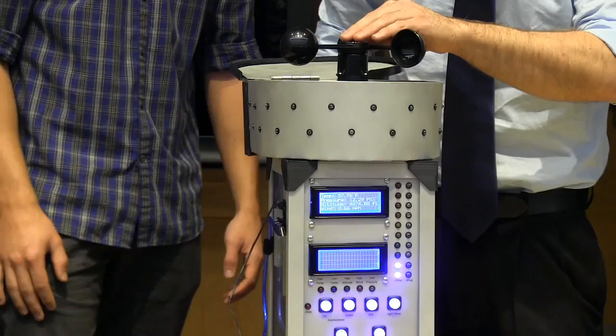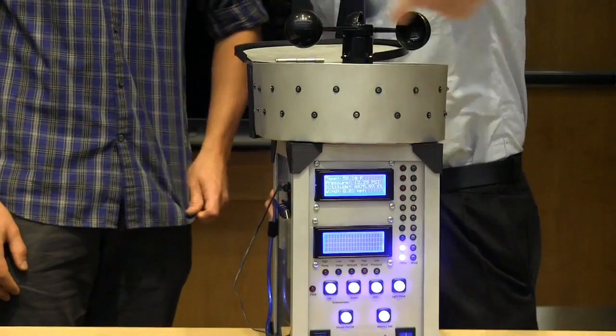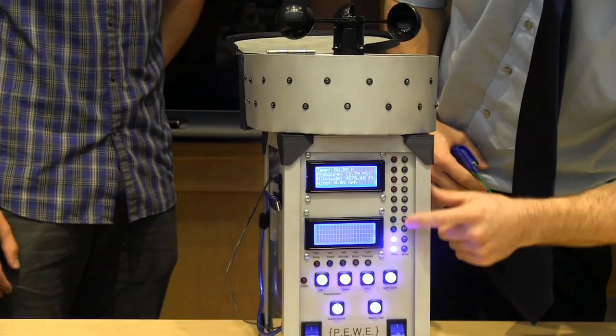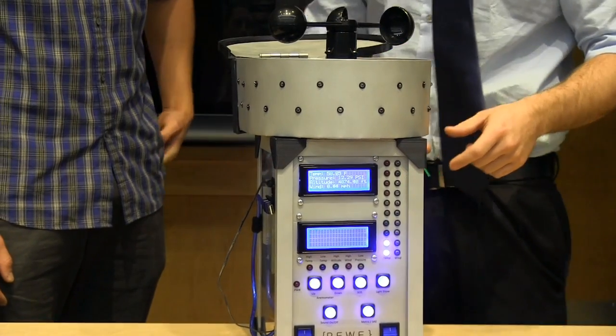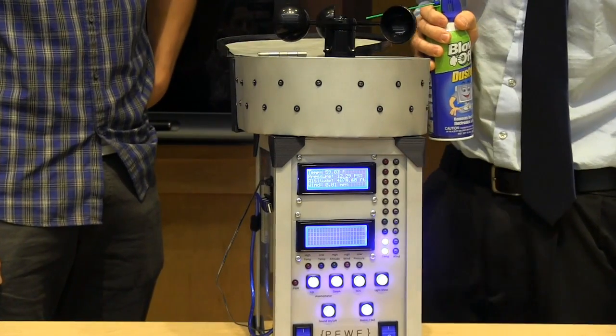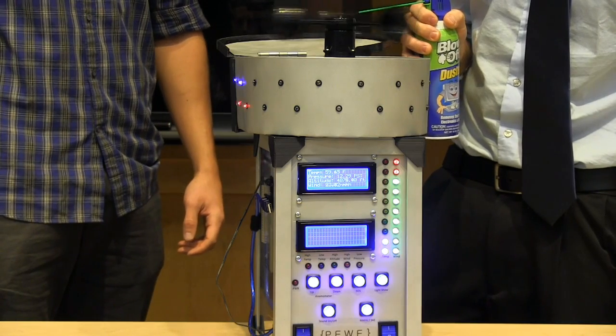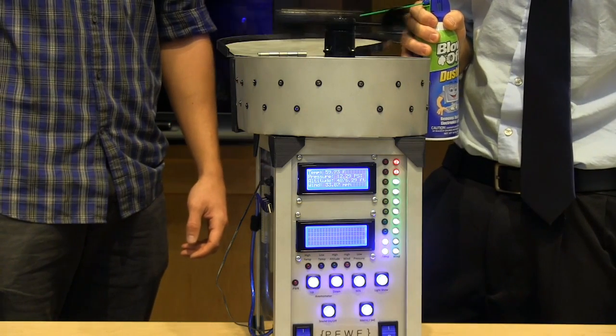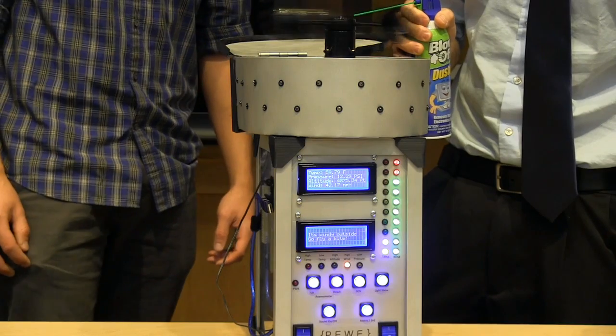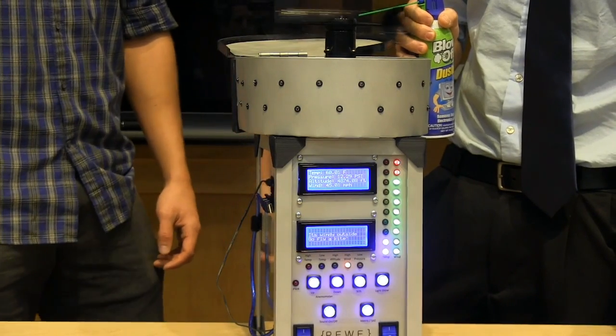Whenever we start blowing on the anemometer, take note of the light array that will go around the top. And also this gauge on this side is the wind speed. Once we increase to a high wind speed, our high wind warning light will turn on.